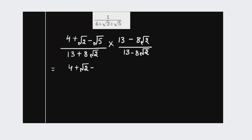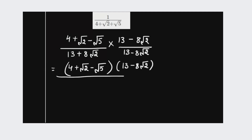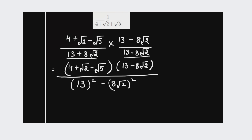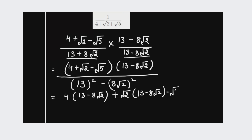Writing the numerator: (4 + root 2 − root 5) × (13 − 8 root 2), divided by 13² − (8 root 2)², using the same formula a² − b². Expanding the numerator: 4 × (13 − 8 root 2) plus root 2 × (13 − 8 root 2) minus root 5 × (13 − 8 root 2).